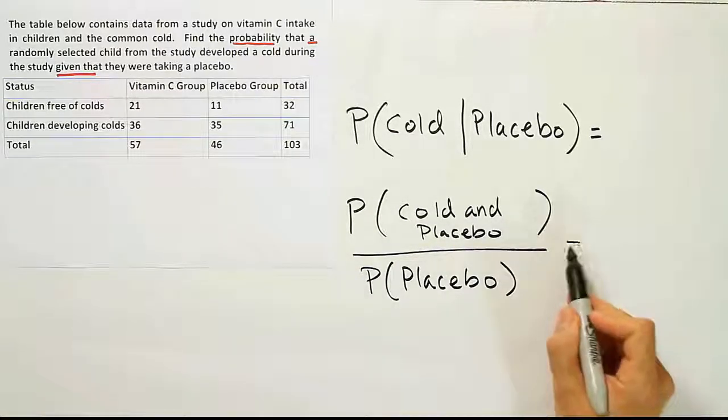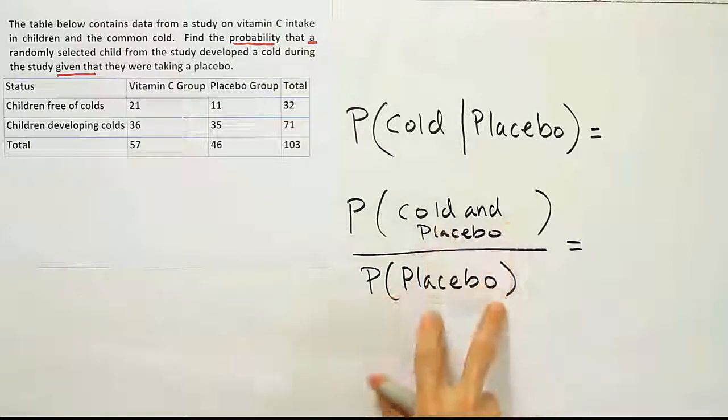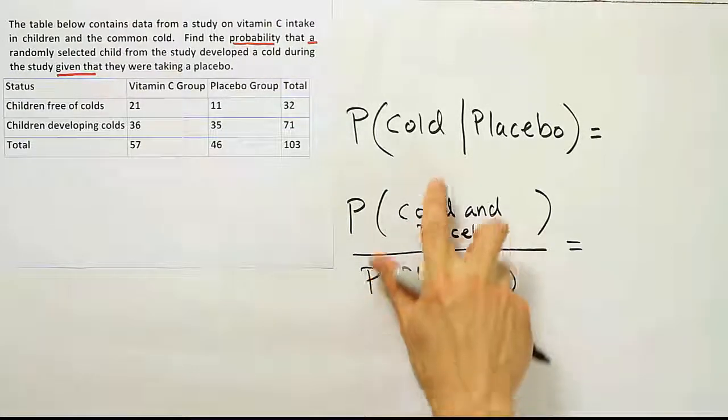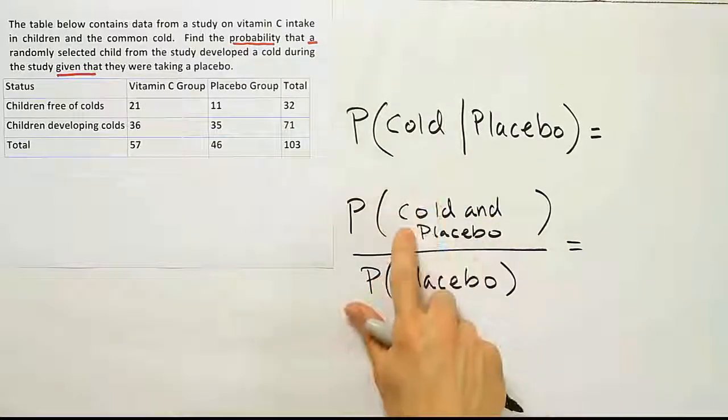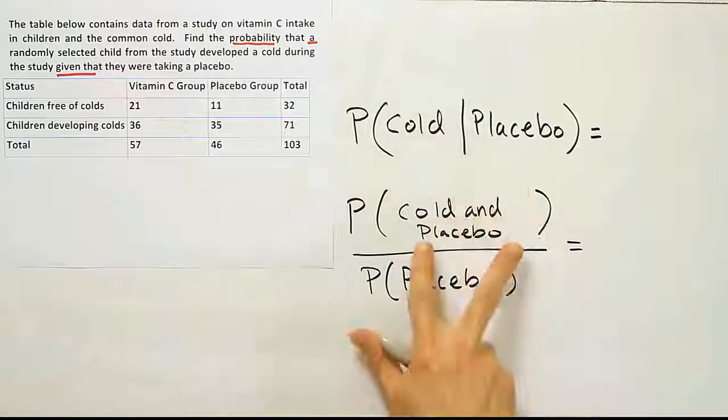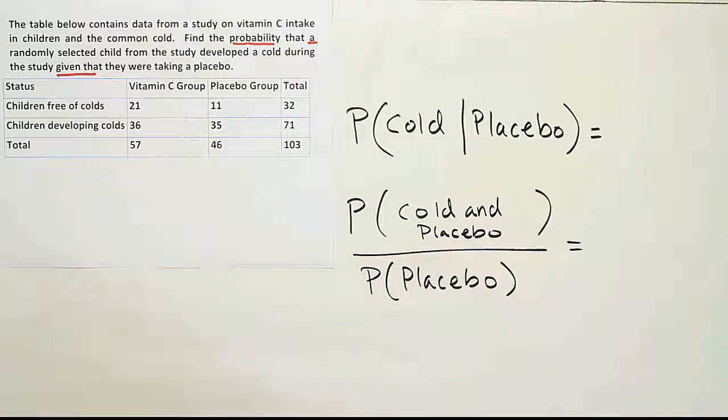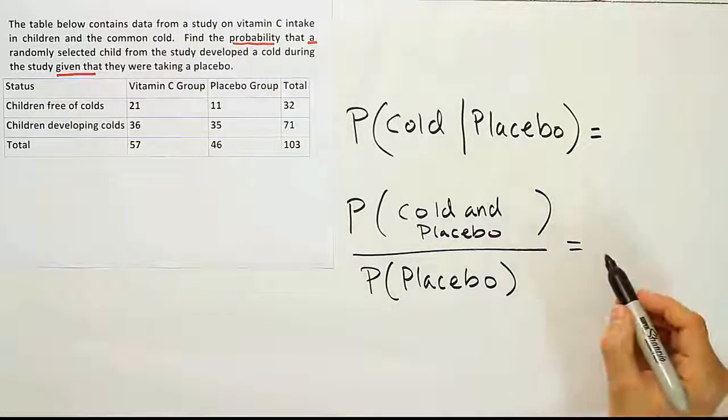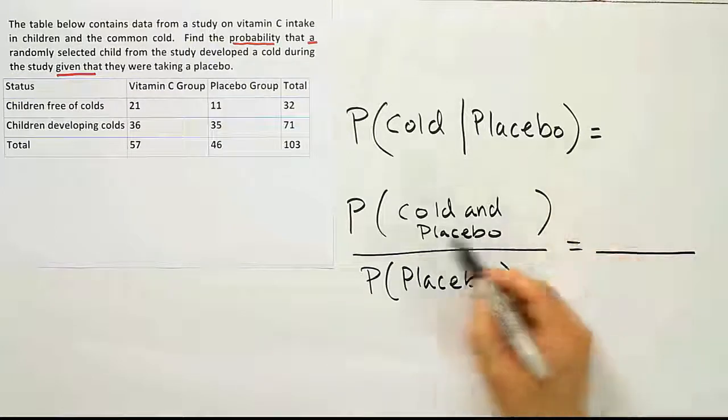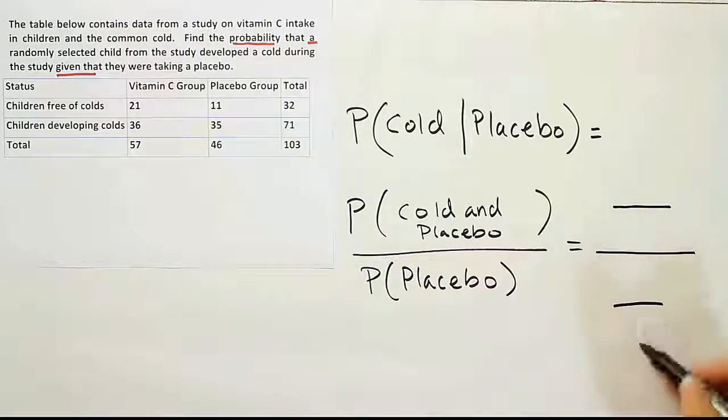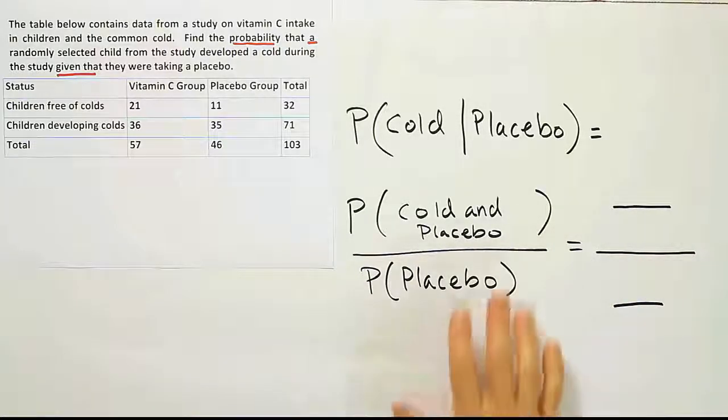Okay, so if you were using the formal formula, this is how you would set up the problem, and then you would find this category, which is the intersection of the two categories, cold and placebo. You put them together into an intersection on the top, and then for the bottom, you put the second one at the bottom always. And since it's a probability, it would technically be a fraction on top and a fraction on the bottom, so a complex fraction. So we're going to do it this way, and then I'm going to show you a shorter way to handle this problem. But let's do it this way first.